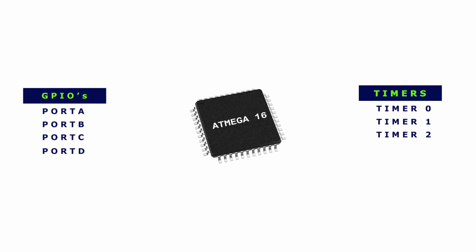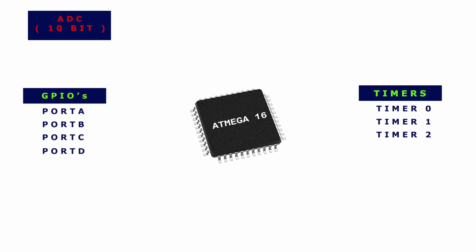Next, we have a 10-bit ADC module in our microcontroller, which is used for converting analog signals into digital format. In total, we have 8 different analog channels through which you can perform this analog-to-digital conversion process.